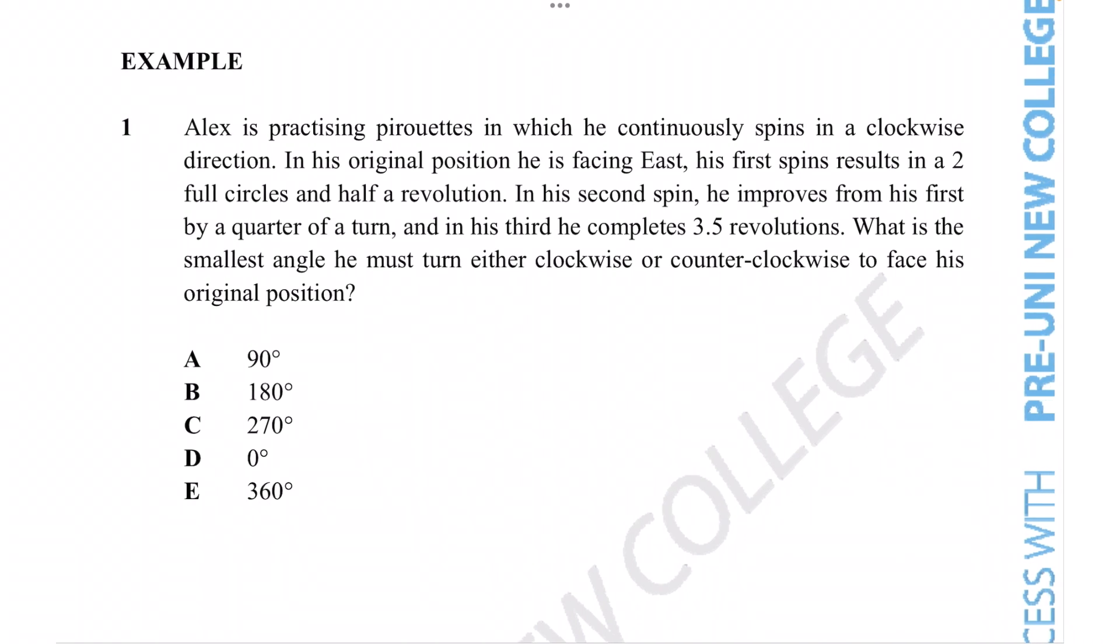Here we see a question where Alex is practicing his pirouettes, where he continuously spins in a clockwise direction. His original position he is facing east. His first spin results in two full circles and half a revolution. In his second spin he improves from his first by a quarter of a turn, and in his third he completes 3.5 revolutions. What is the smallest angle he must turn either clockwise or counterclockwise to face his original position?